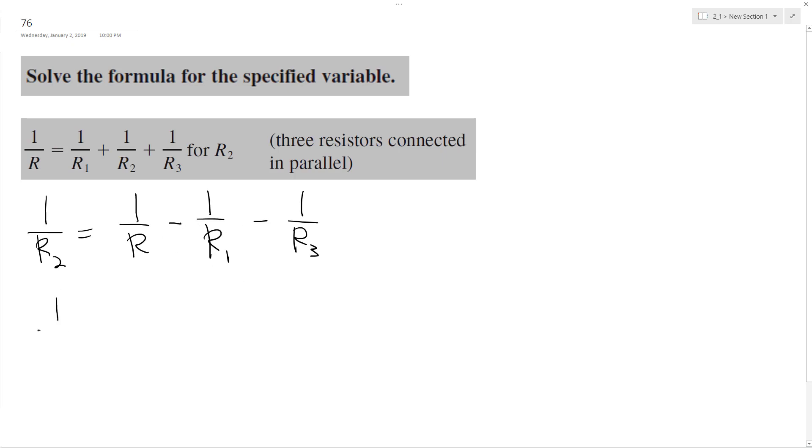R3. So we're going to have 1 over R2 equals R1 R3 minus R R3 minus R R2.